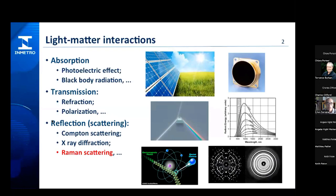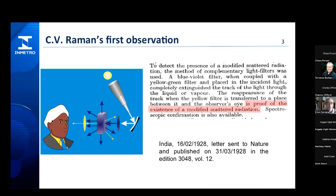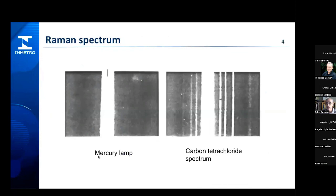Raman scattering is one of the many ways that light — and more generally, electromagnetic radiation — can interact with matter. When a ray of light encounters a surface, there are basically three options: it can be transmitted, absorbed, or reflected. Sir Raman first observed this phenomenon when studying the scattering of light through liquids. He noted that when light interacts with the liquid, a new type of radiation appears. Using two complementary filters, he proved that part of the scattered light has a different colour from the incident light.